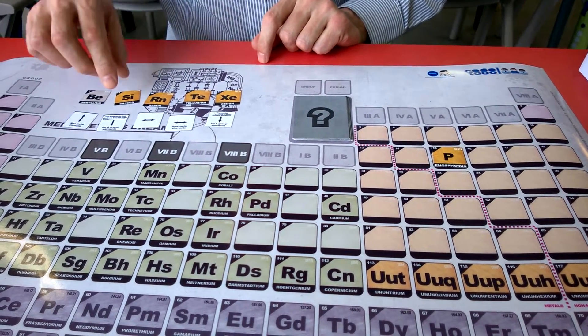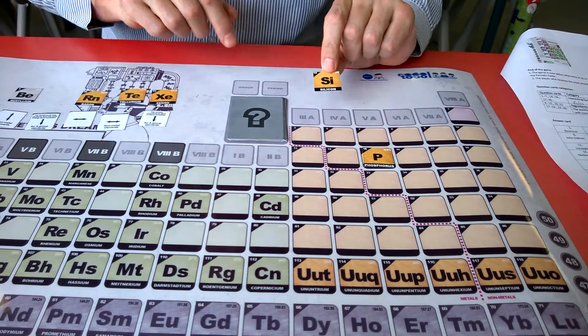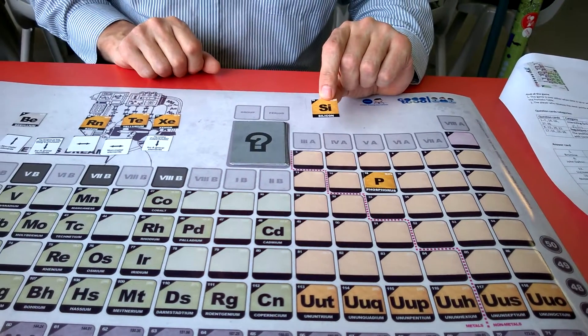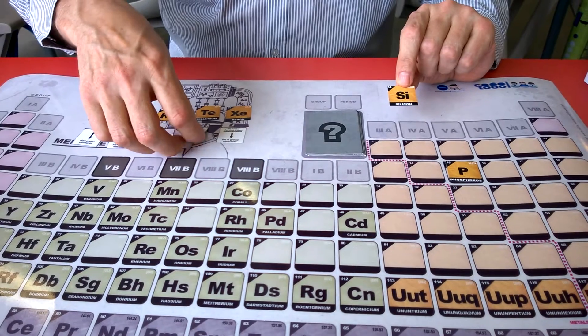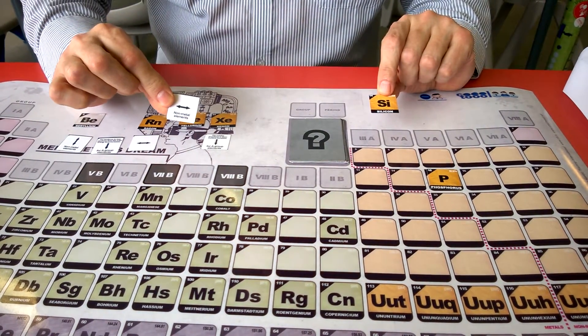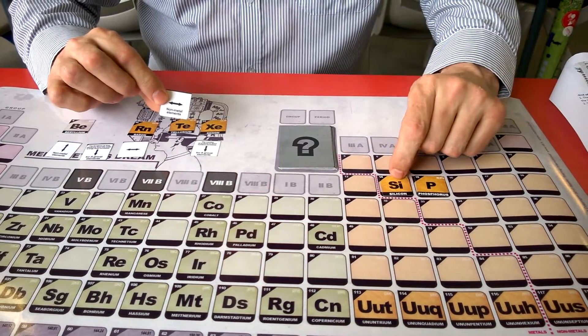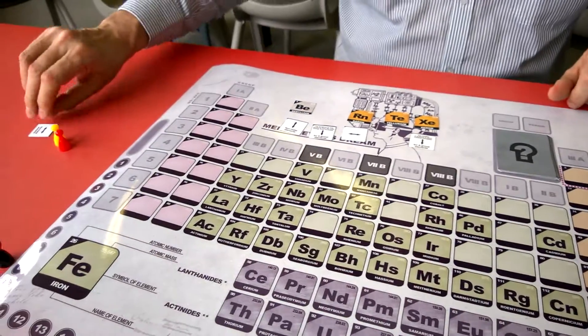So looking at my cards I see I have silicon, which would be in the same period as Phosphorus. Now since Phosphorus and silicon are both non-metals, this card allows me to place another non-metal in the same group as a non-metal so I can use this card to place the silicon in its box and then I discard this card.